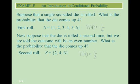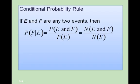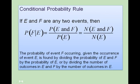The probability of rolling a 4 was affected by our outcome being an even number. The conditional probability rule says that if E and F are any two events, then the probability of F given E is equal to the probability of E and F divided by the probability of E, or dividing the number of outcomes in E and F by the number of outcomes in E.